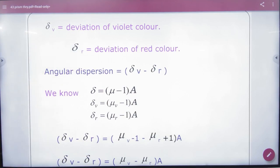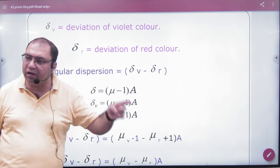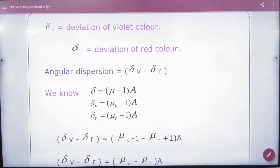What is angular dispersion? Delta violet minus delta red. The difference of deviation is angular dispersion.